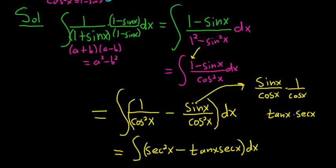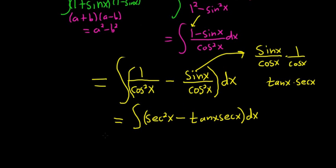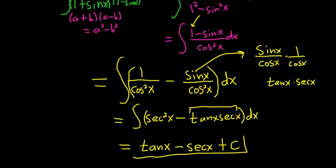This works out so beautifully, right? This is amazing. This is equal to, now we have to integrate. So we ask ourselves, what's a function whose derivative is secant squared? Well, tangent, right? The derivative of tangent is secant squared. And then what's a function whose derivative is secant tangent? Well, secant, so this is tangent minus secant plus our arbitrary constant of integration, capital C.